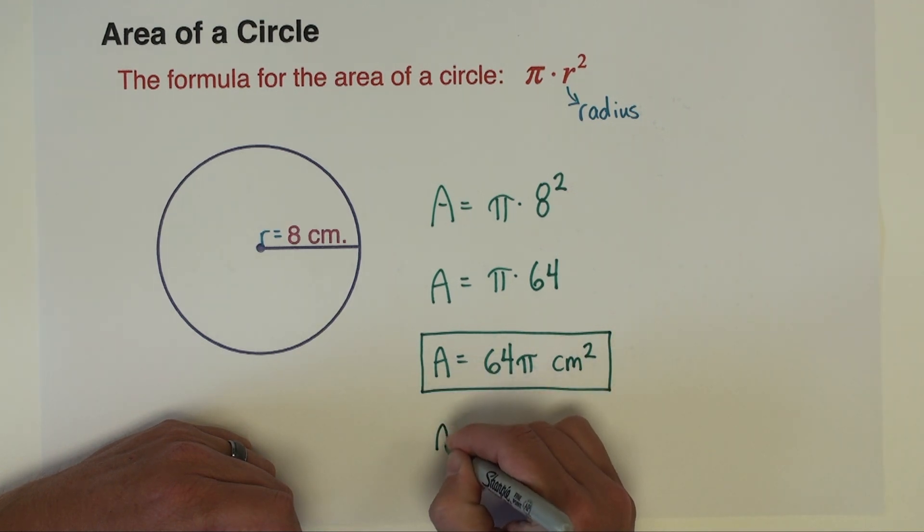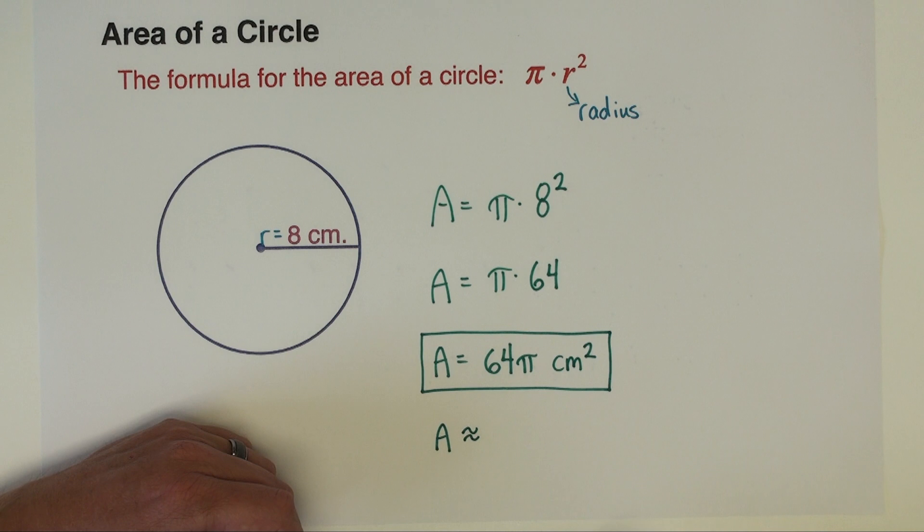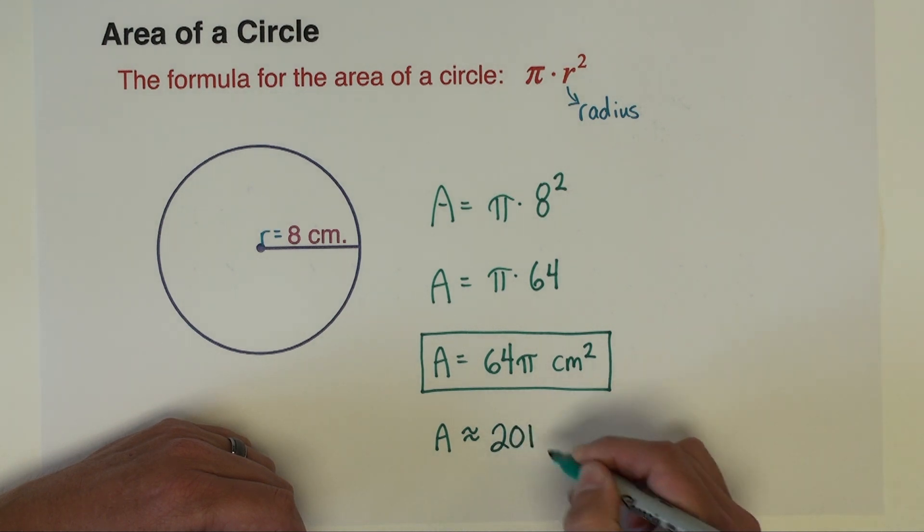Now sometimes you do want an approximate answer. For an approximate answer, we actually need to take 64 and multiply it by pi. Your calculator should have a pi button, and when you do that you're going to get a decimal value. I'm just going to use two decimal places, so rounding to the nearest hundredth I get 201.06, and the units are still centimeters squared.